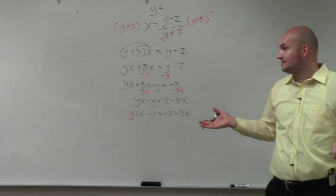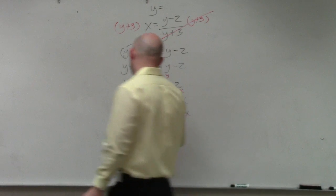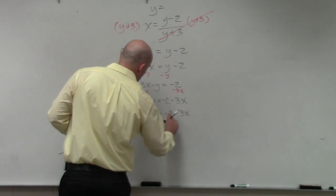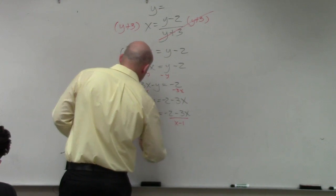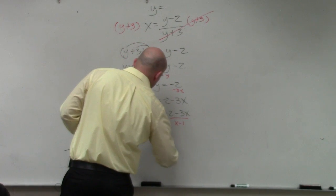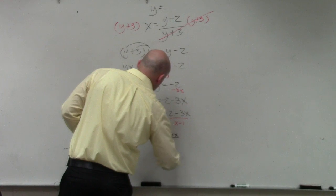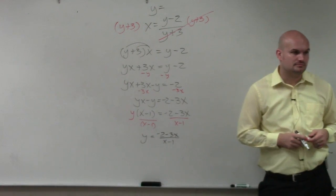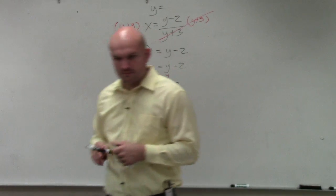And then my y, you need to undo what's happening to y. My y is being multiplied by x minus 1. So divide both sides by x minus 1, and that's it.